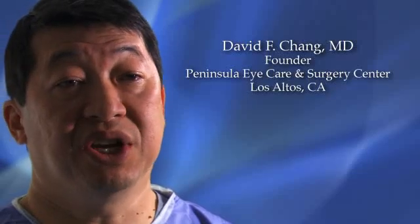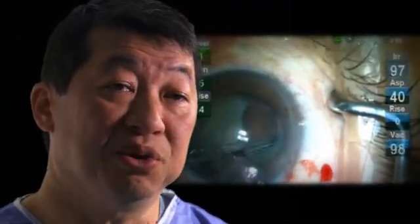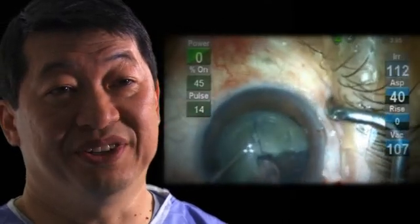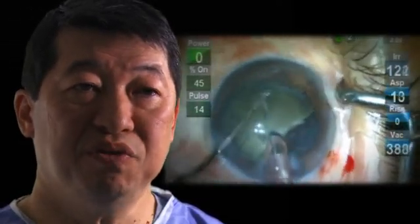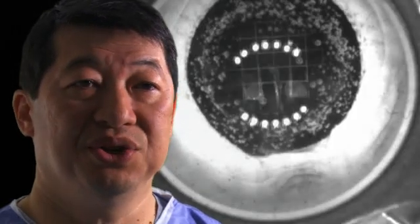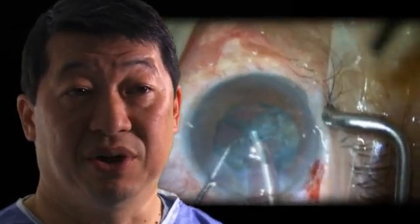So I think one nice thing is the Lensar system has the potential to really give everyone the advantage of FACO chop, be they inexperienced or experienced, be it an easy nucleus or a medium or a denser nucleus. And again, I think that's something, to be able to improve that consistency, particularly in difficult cases, to help us with the really brunescent case, that's where there's a potential here to improve the safety and the outcomes of cataract surgery.